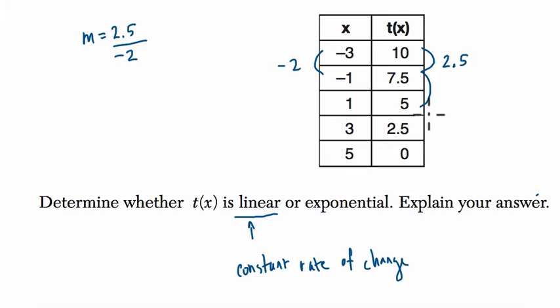And then if I do it again here, I get another 2.5 over negative 1 minus 1, which is negative 2. So it's again the same slope, and so on and so forth.